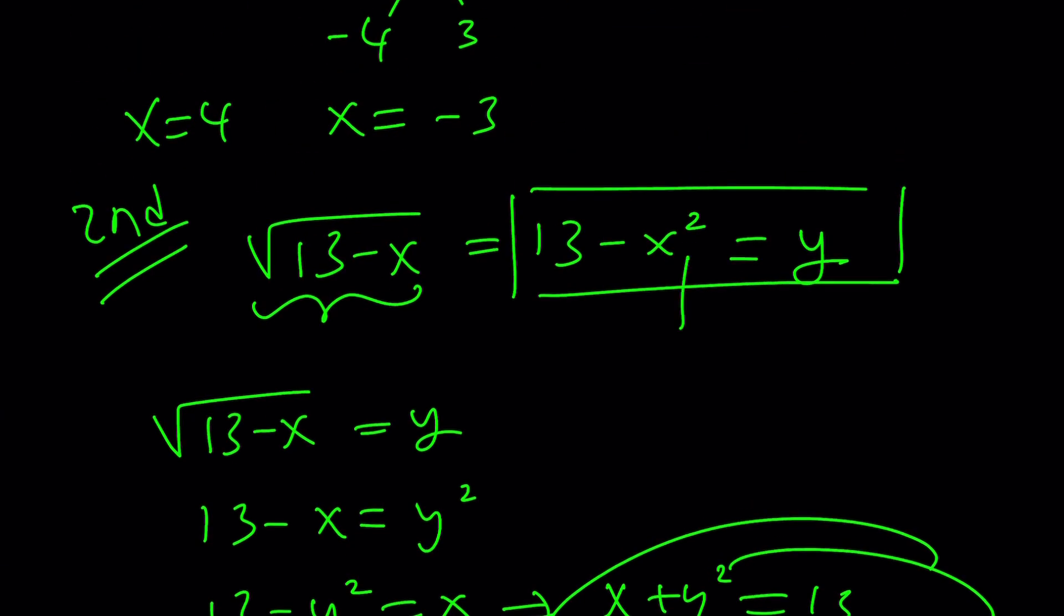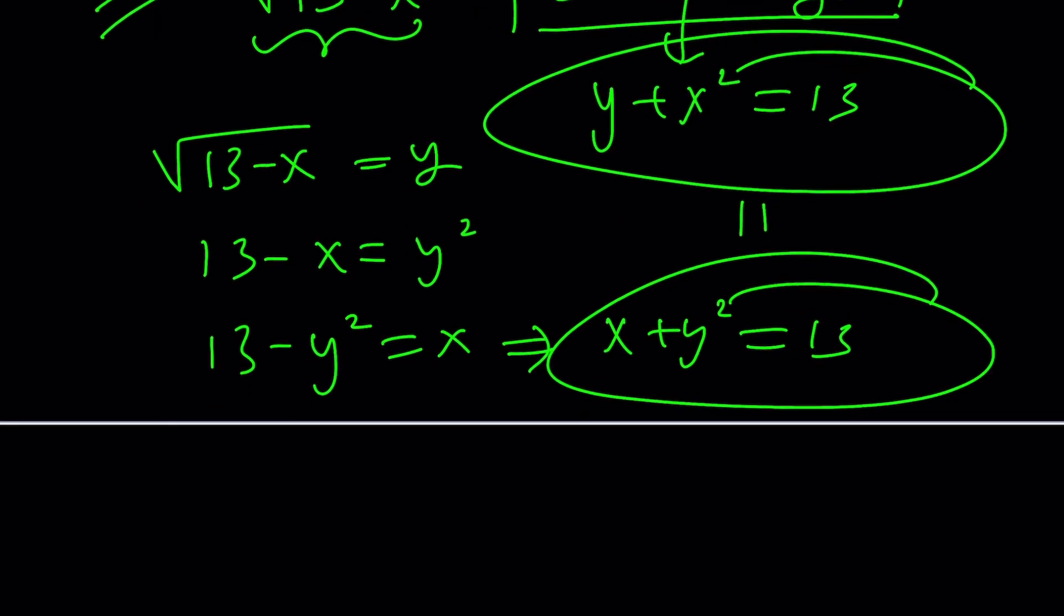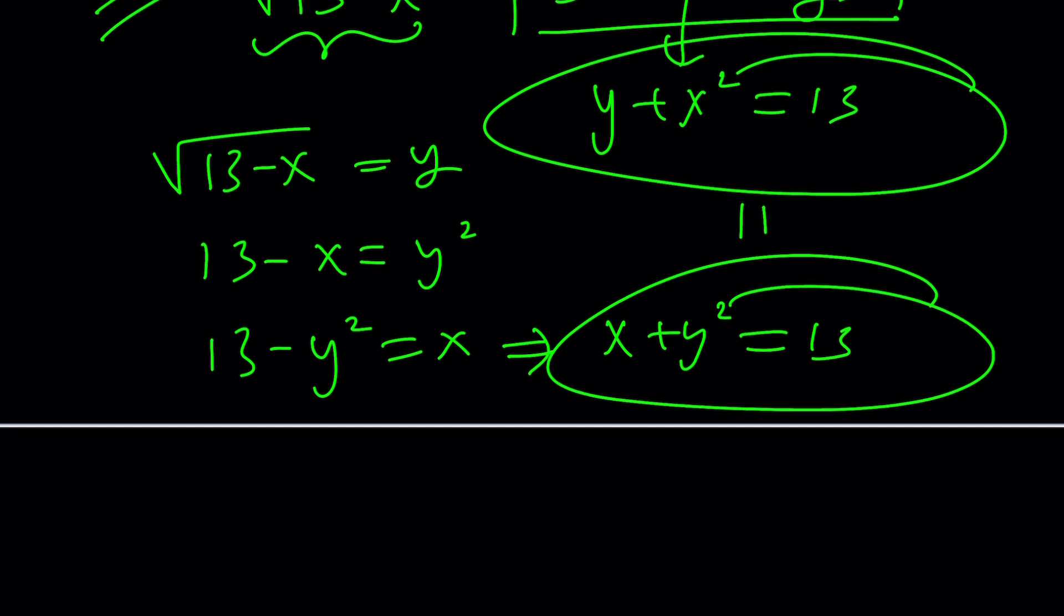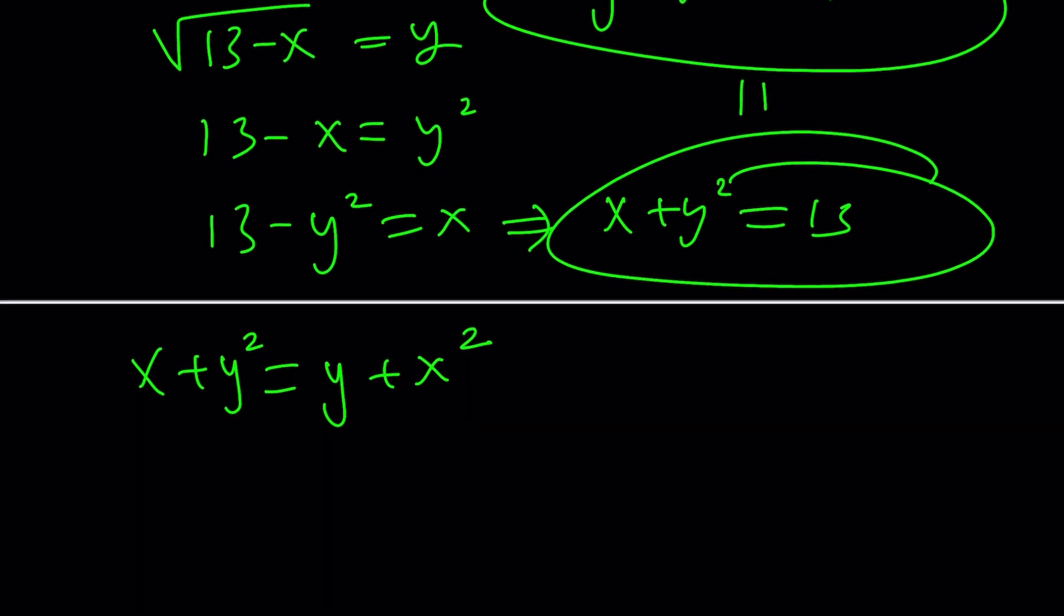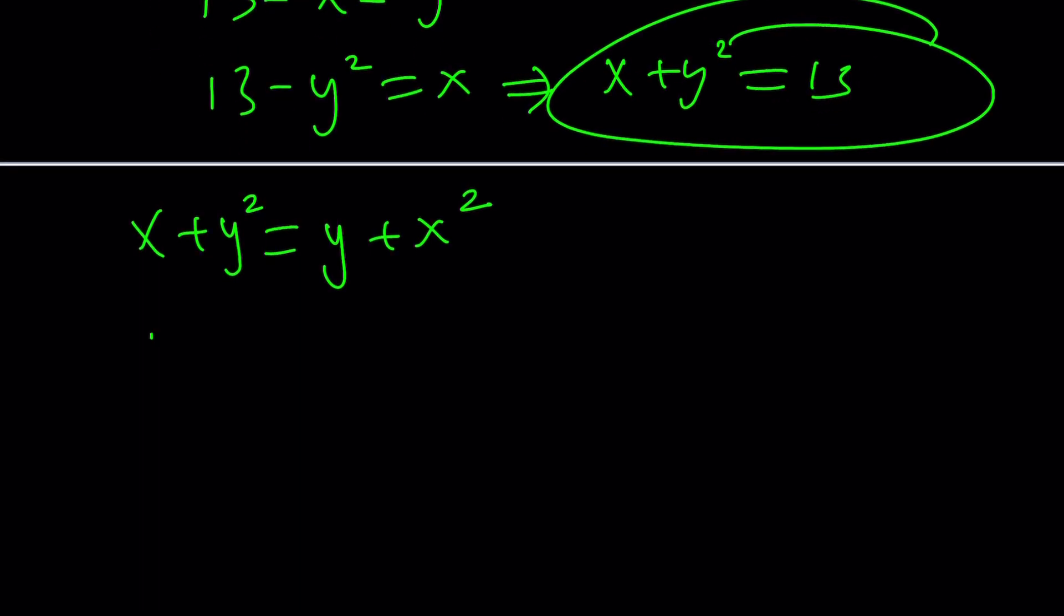Let's keep that. And this gives us y plus x squared equals 13, which means these two things are equal, because they are equal to the same thing. So we can safely say that x plus y squared equals y plus x squared from here. Of course, we invented y, but don't worry. This is going to make it easier. And now let's put everything on the same side.